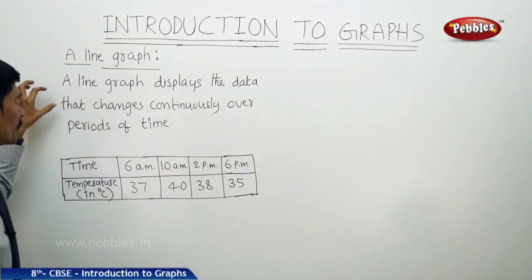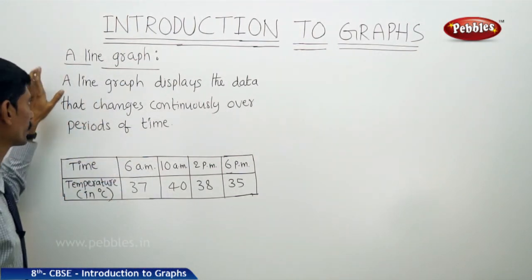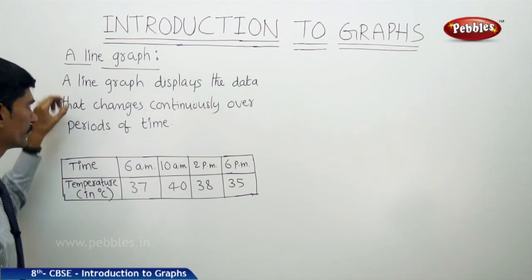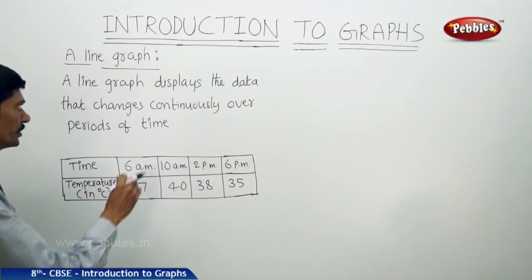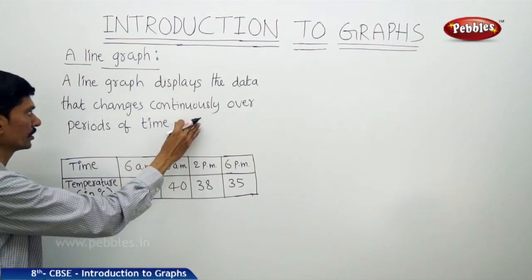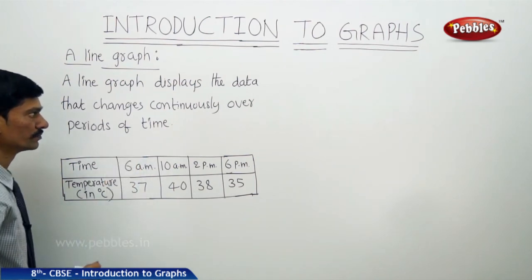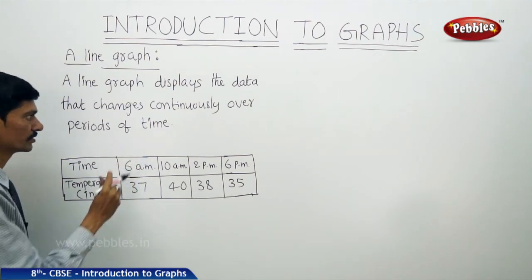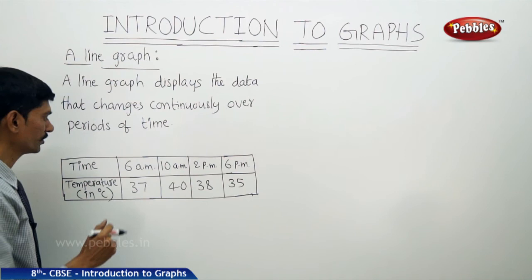Let us see the next graphical representation, a line graph. A line graph displays the data that changes continuously over periods of time. Now let us understand this with an example.